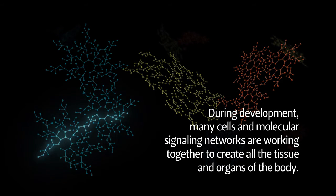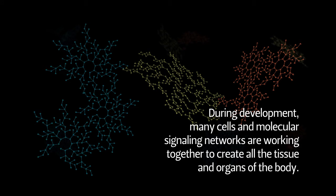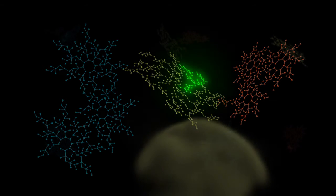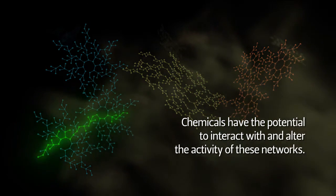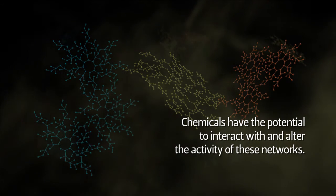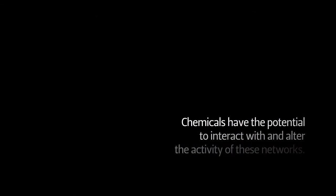For example, the brain, heart, liver, etc. are all formed initially during development. When organisms are exposed to chemicals, these chemicals have the potential to interact with and alter the activity of these signaling networks.